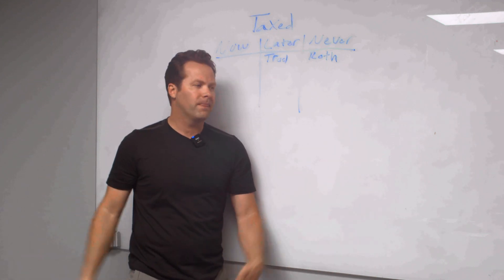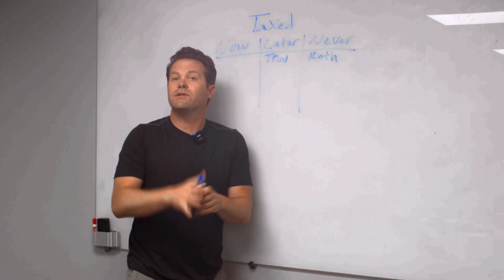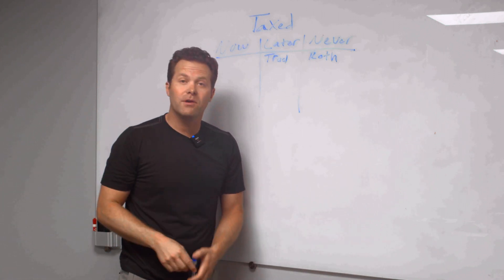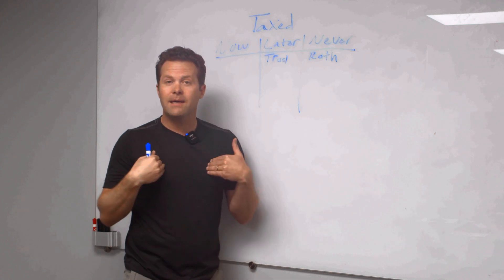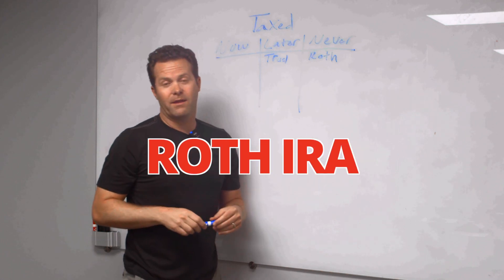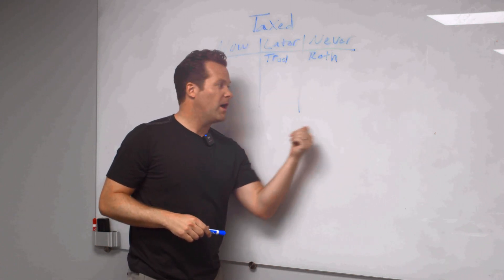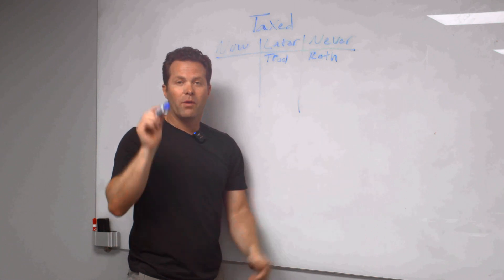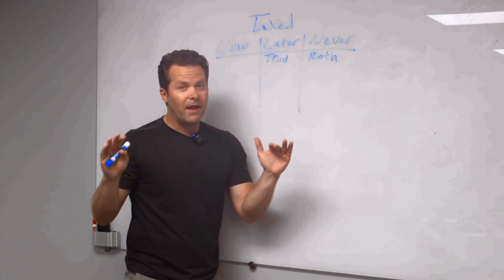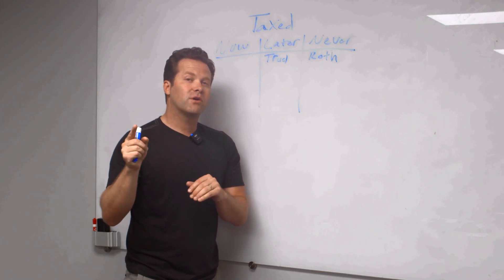Now some people are like, well, Matt, I make too much money. I can't do a Roth IRA because there's income phase out for high income earners. Not true. I'm high income. I do a Roth IRA. You do what's called a backdoor Roth IRA, where you make a traditional IRA, non-deductible contribution, and you do a Roth conversion. So the Roth IRA is available to everyone. Everyone can have a Roth IRA. You might just have to do a backdoor Roth IRA.